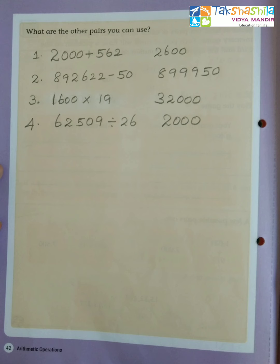Now see the second pair: 892,622 minus 50, which gives 899,950. If I round off 892,622, I'll be getting 9 lakh. So 9 lakh minus 50, I'll be getting 899,950. That is my next pair.